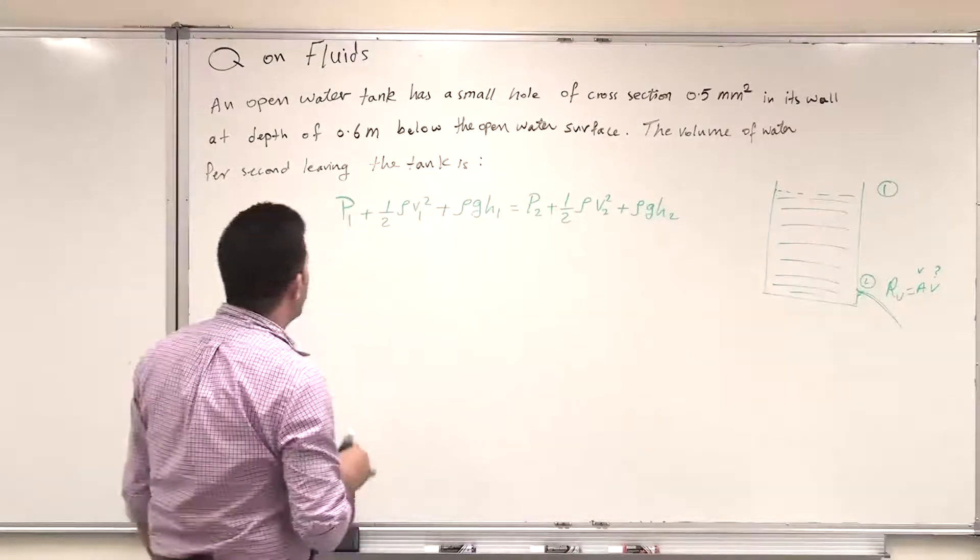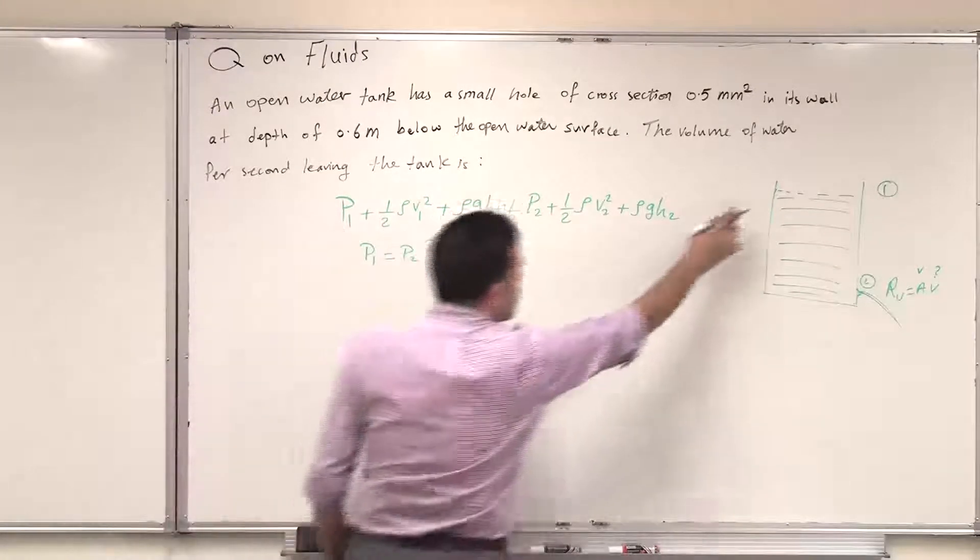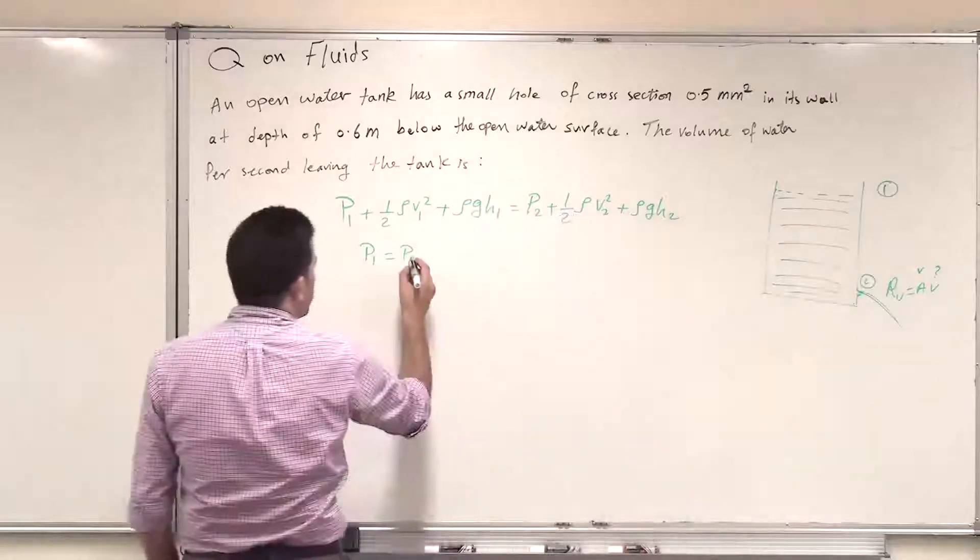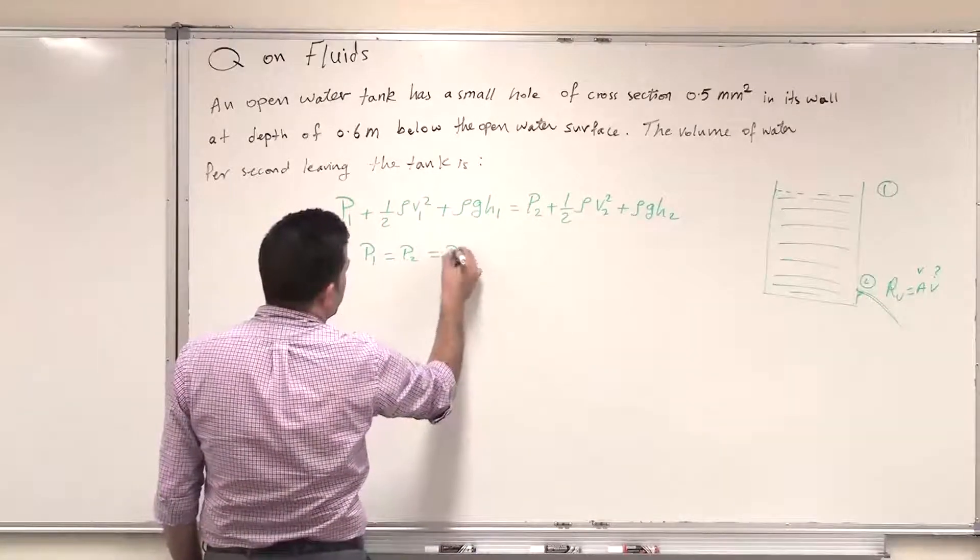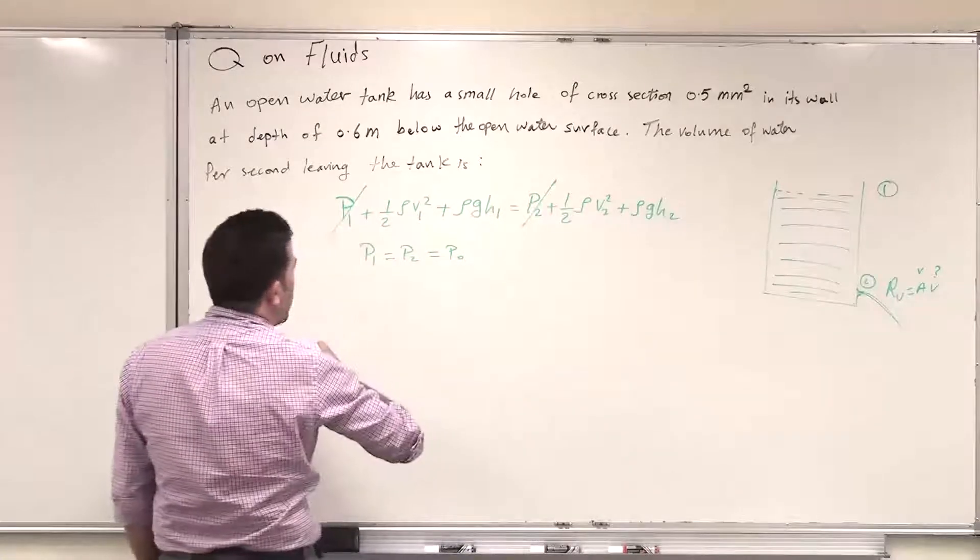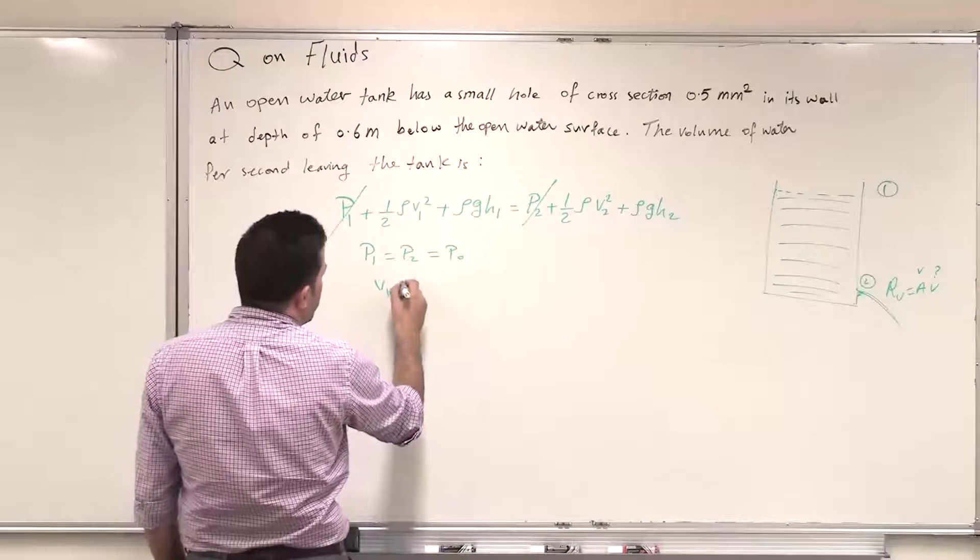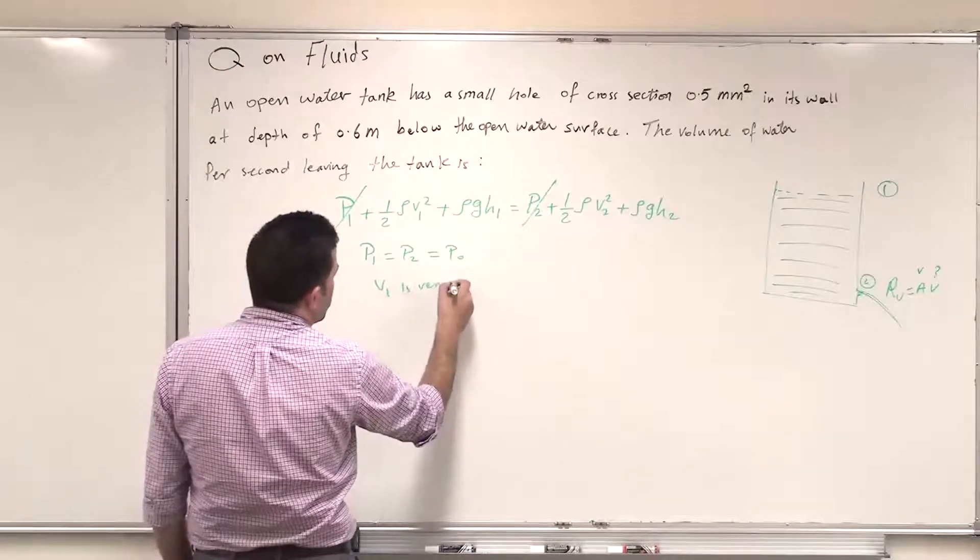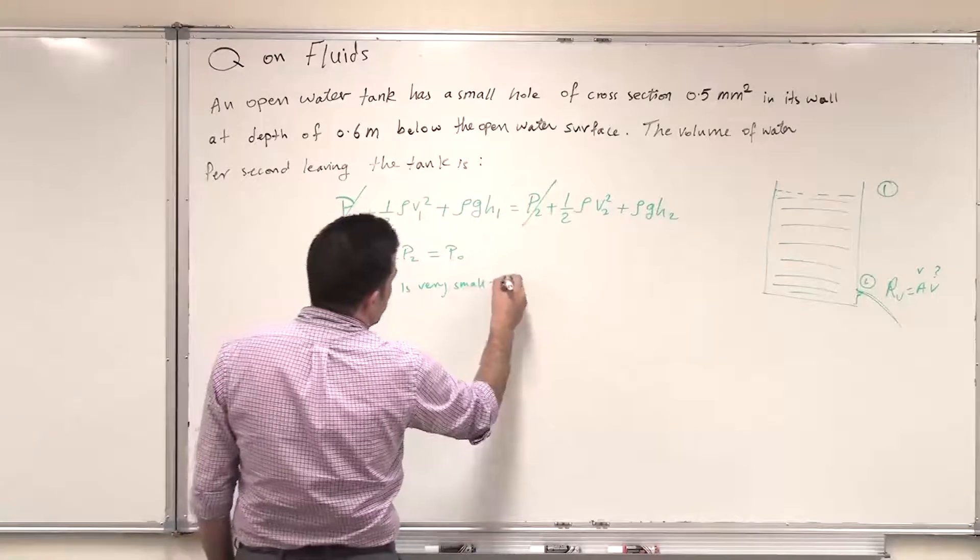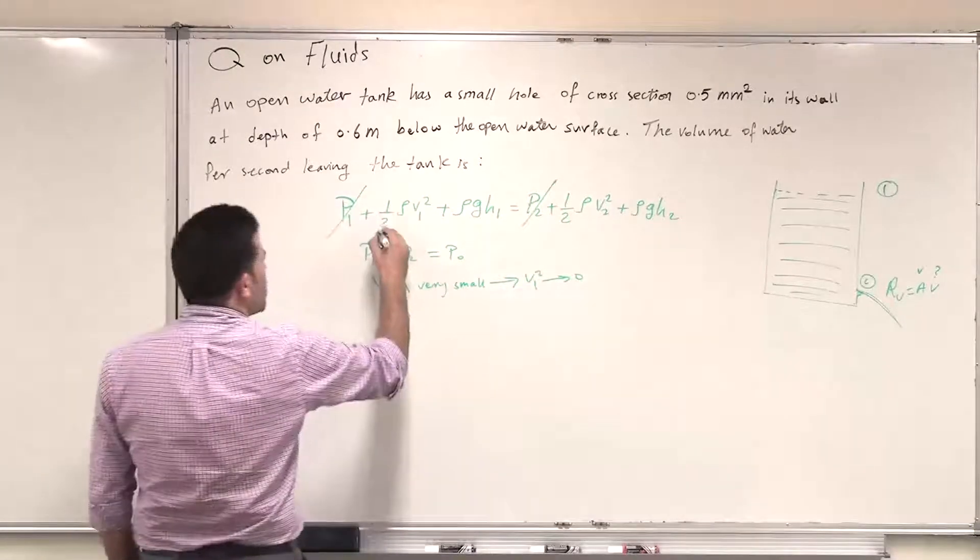Now we know that at P1 and P2 it is atmospheric pressure here and this location is exposed to atmosphere so it is P0 so we can cancel out those two. And we know that at P1 V1 is very small. This is an approximation in the book so as a result V1 squared will go to zero so this term will cancel out.